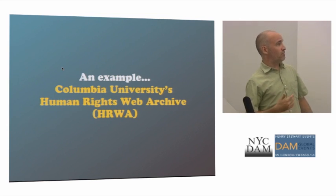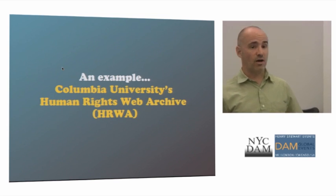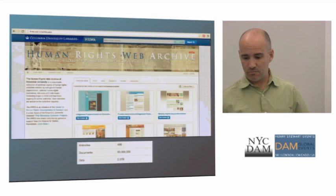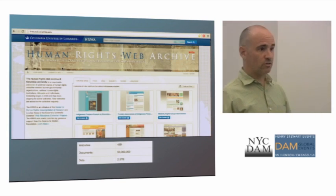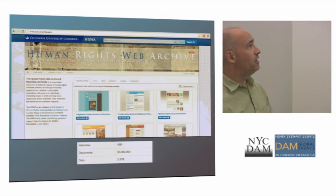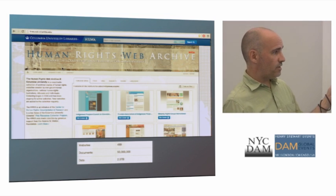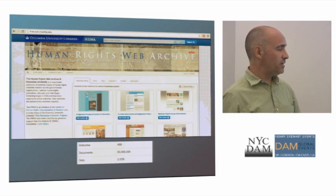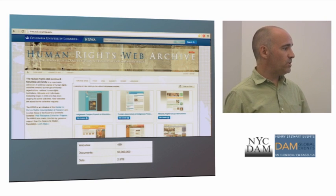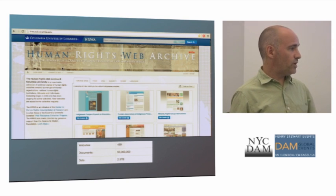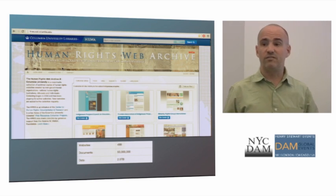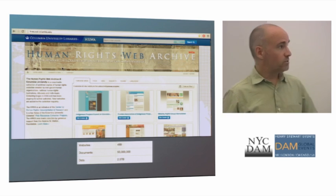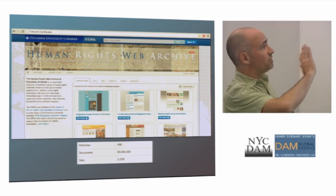I'm going to give an example: Columbia University's Human Rights Web Archive, HERWA. Here's what the site looks like — it's still in beta, we're still working on it. It contains an index of 499 websites, over 50 million documents, and two and a half terabytes of data. It's a lot of information with a pretty simple design.